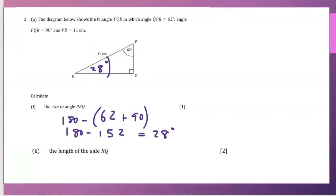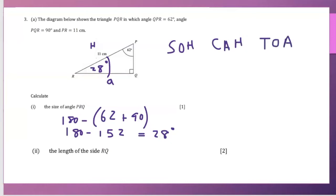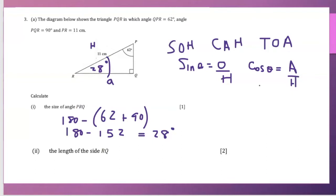The next question asks us to calculate the length of side RQ. To find RQ, we identify the hypotenuse and the adjacent side — adjacent because it is beside the 28 degree angle. Remember SOH CAH TOA: sin θ = opposite/hypotenuse, cos θ = adjacent/hypotenuse, tan θ = opposite/adjacent.